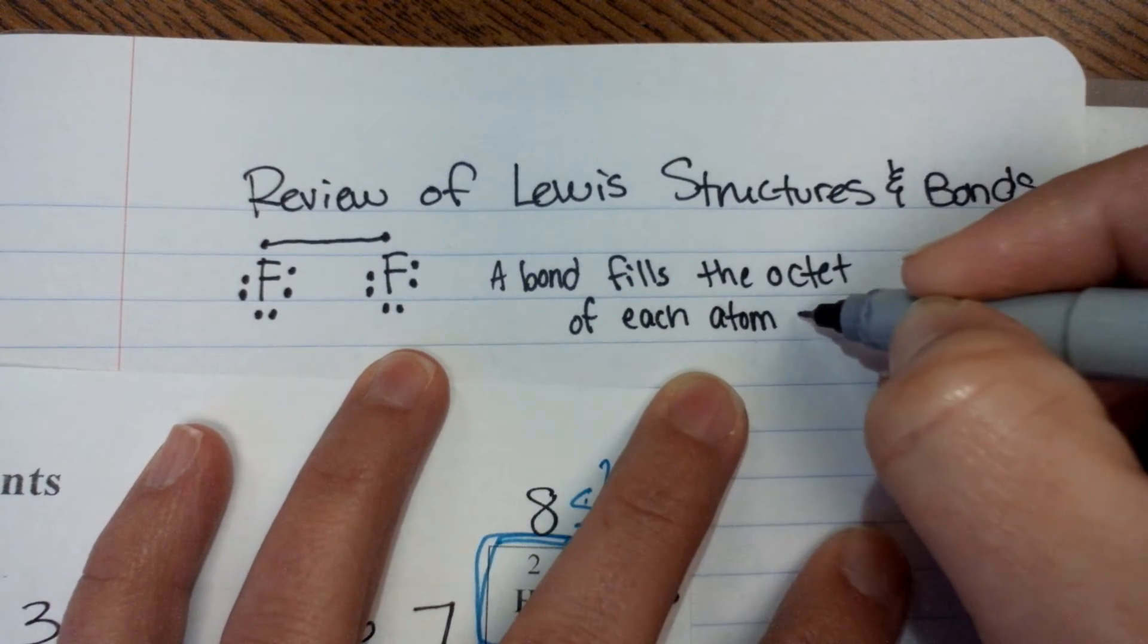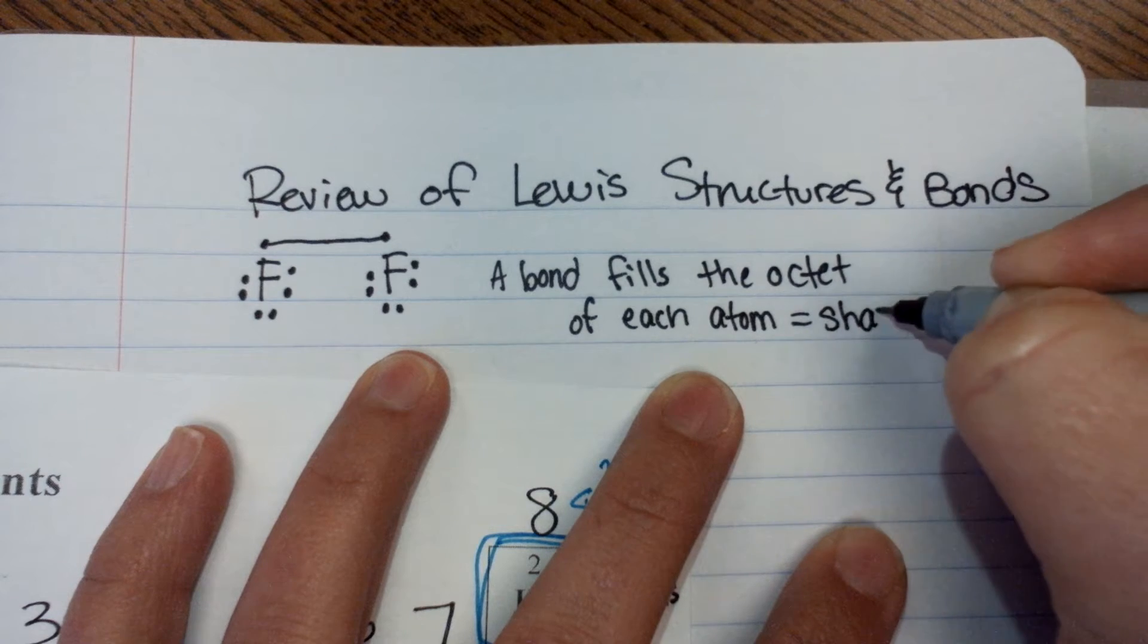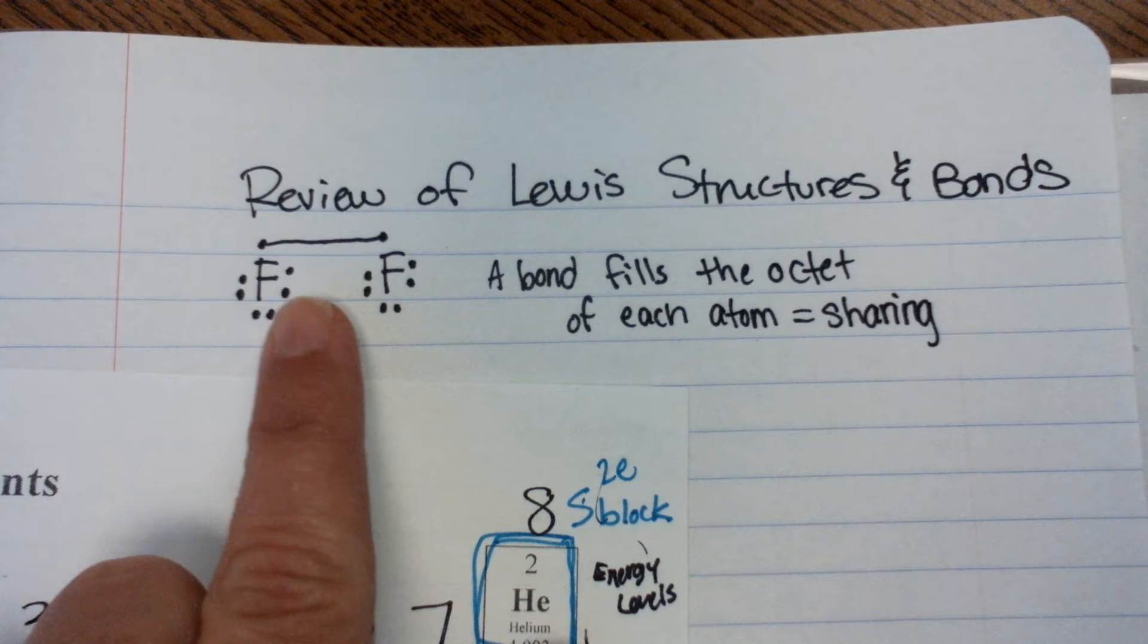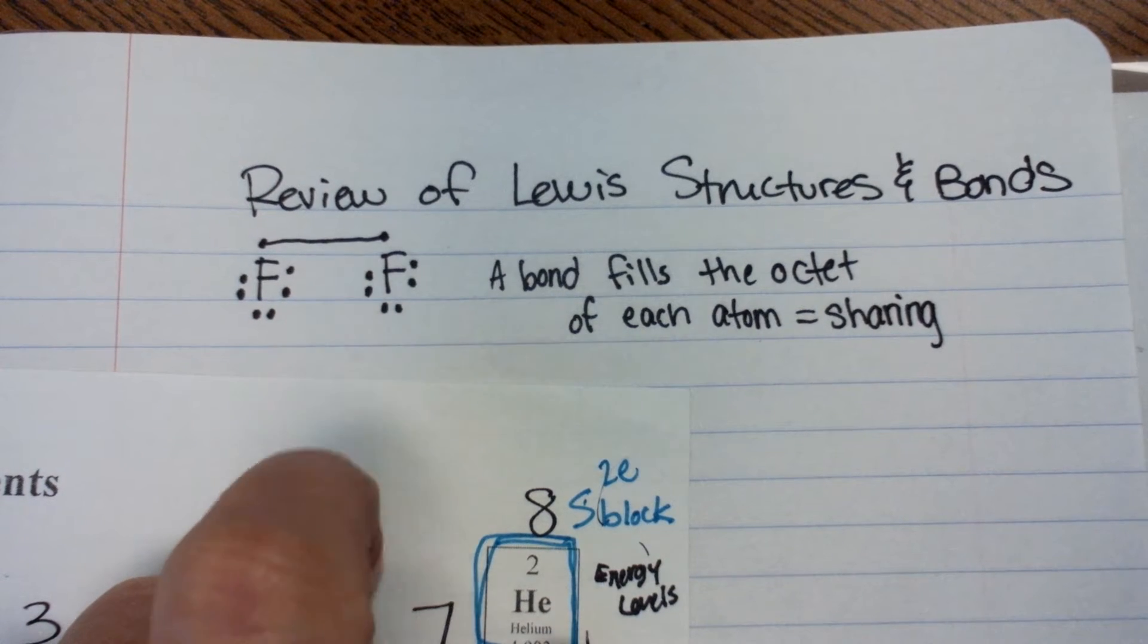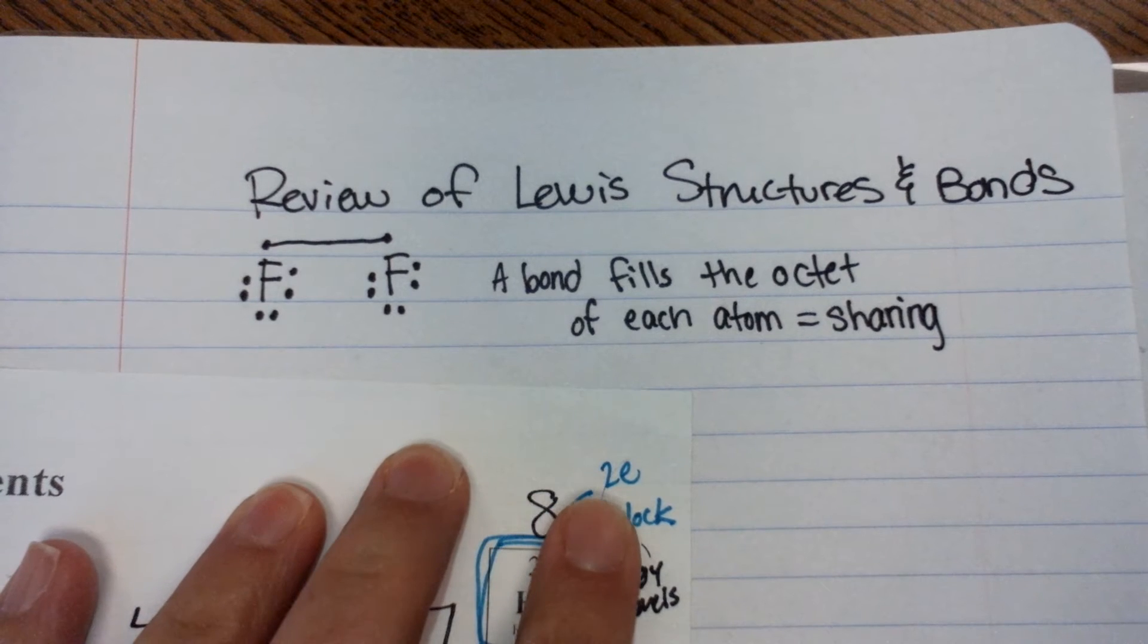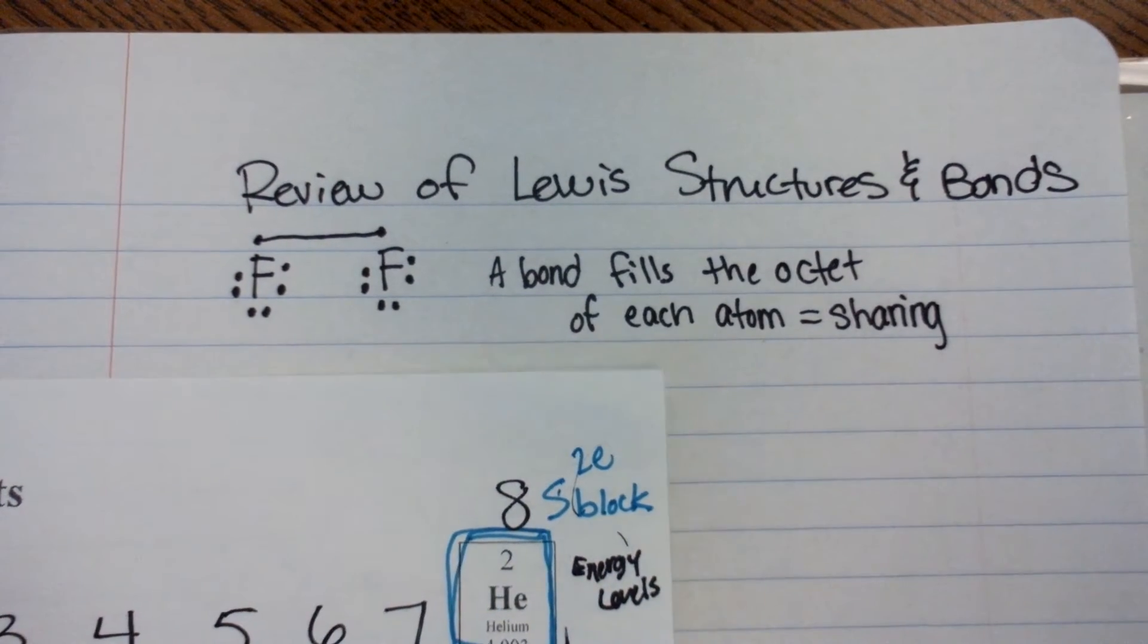So a bond fills the octet of each atom. Then they are shared. But every time we make a bond, do we fill the octet?